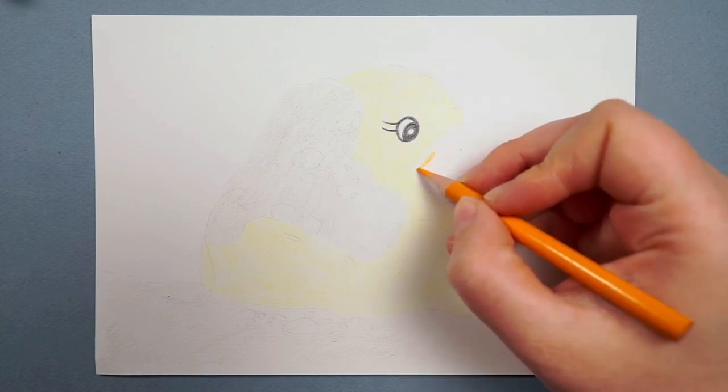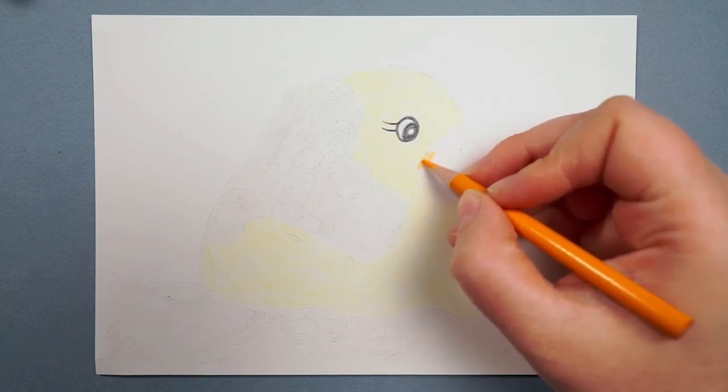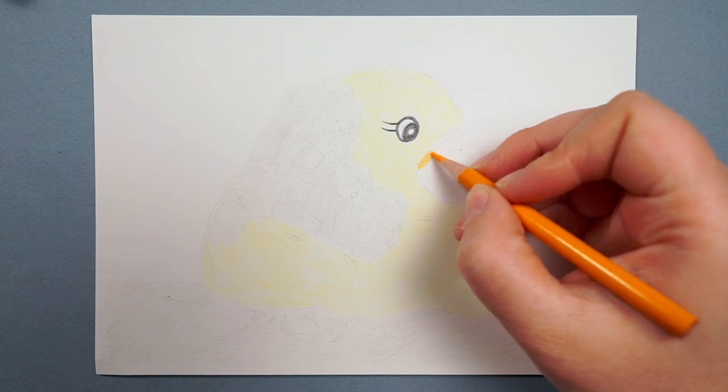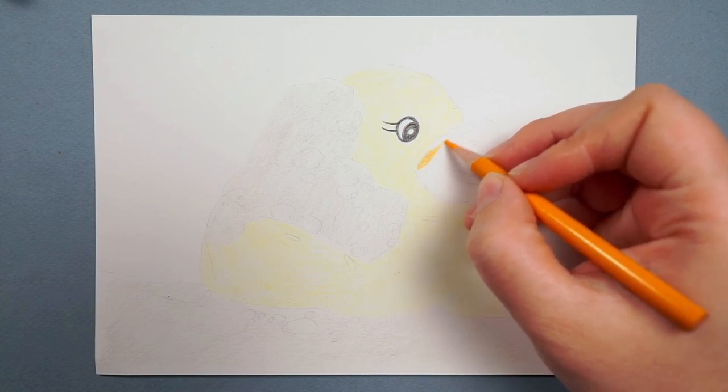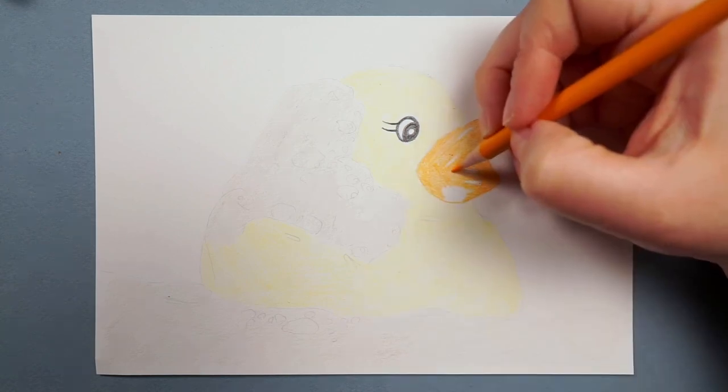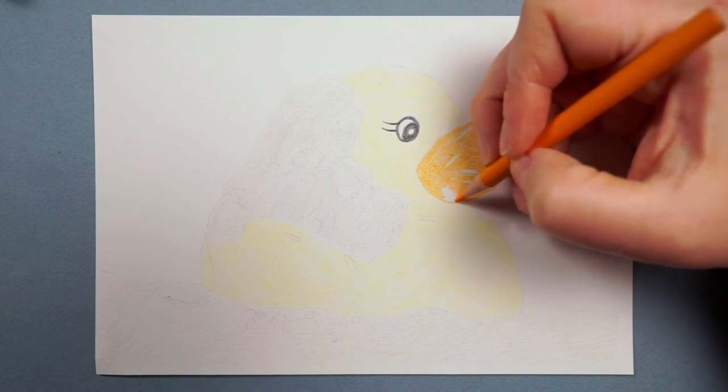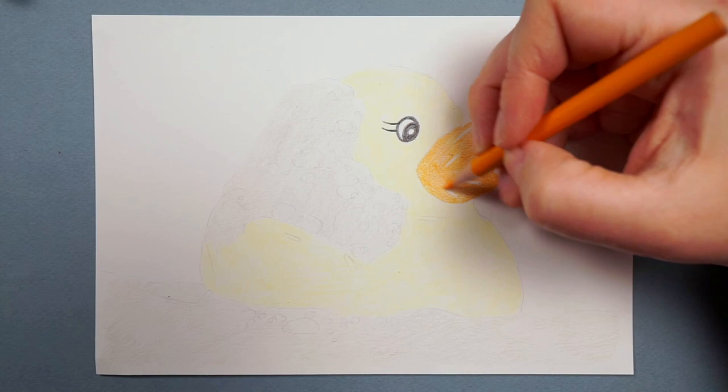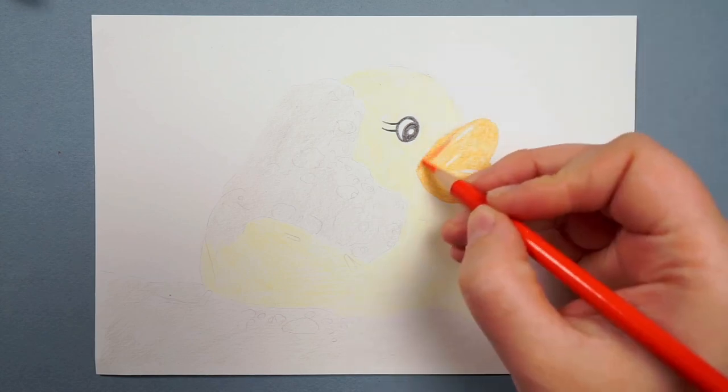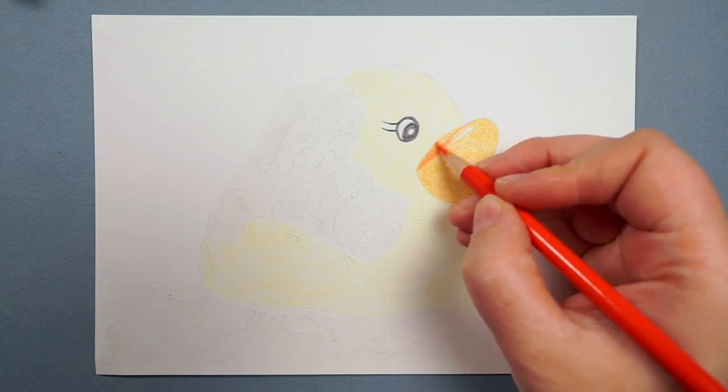I then want to move on to base layers around the duck's beak, this time working with a kind of orangey yellow and again putting down that base layer. So once I've got some color down on the whole of the duck, I can then begin building up the rest of the colors. I want to be working from these lighter colors towards the darker colors. For now, I'm just focusing on the duck, we'll think about the bubbles in a little while.